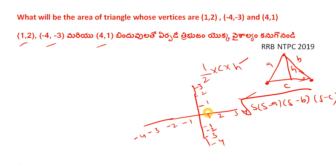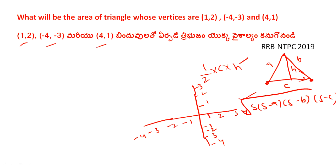If x-axis is 1 and y-axis is 2, so the point (1, 2) is here. This is the example. Next, minus 4 on the x-axis and minus 3 on the y-axis gives point (-4, -3). Next, (4, 1): x-axis is 4 and y-axis is 1. So we have 3 points on the axes.